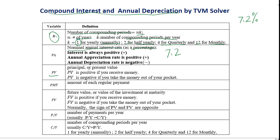PV is the principal or present value. PV is positive if you receive money, and PV is negative if you take the money out of your pocket. PMT stands for payment — it's the amount for each regular payment. For example, when you have a loan, you need to pay a monthly payment; that will be PMT.